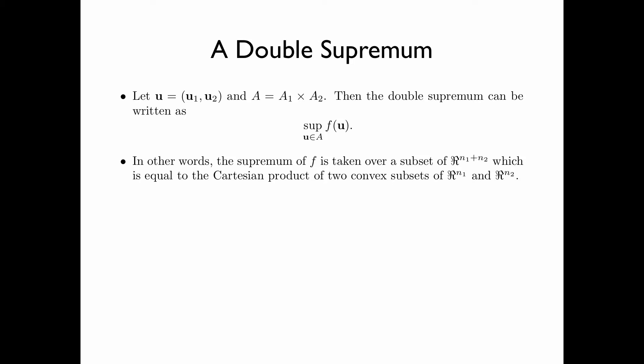In other words, the supremum of f is taken over a subset of R to the power n_1 plus n_2, which is equal to the Cartesian product of two convex subsets of R^n_1 and R^n_2. Denote the value of this supremum by f*.